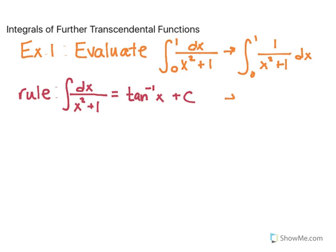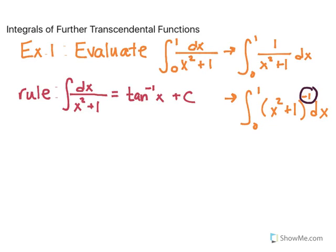You might also try to rewrite it without a fraction, as x squared plus 1 to the negative 1 dx. The problem is that when you integrate, you have to add 1 to the exponent — and negative 1 plus 1 is 0, which is its own problem. So you want to check your rules sheet to see if there's a rule for this, and of course there is, because nothing else works.